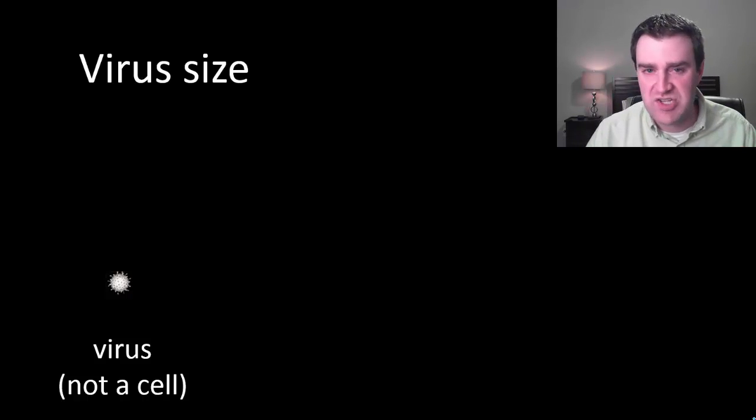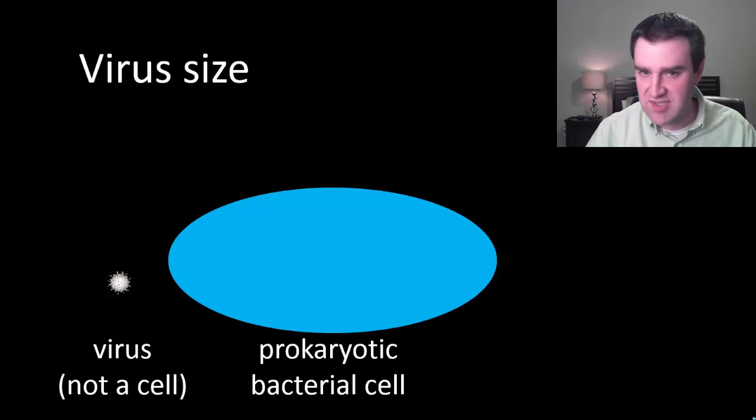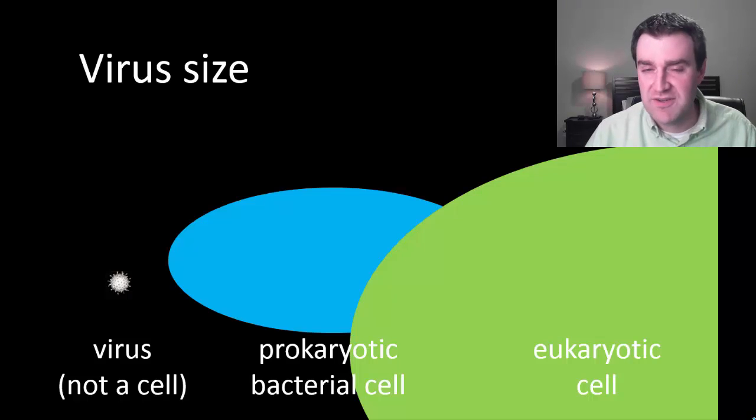And they're typically much smaller than real living cells, even prokaryotic cells which we've said were much smaller themselves than eukaryotic cells. So viruses are really tiny little particles. And that's why they're going to have to break into living cells in order to reproduce themselves because they really don't carry much of anything except the instructions to build new viruses.